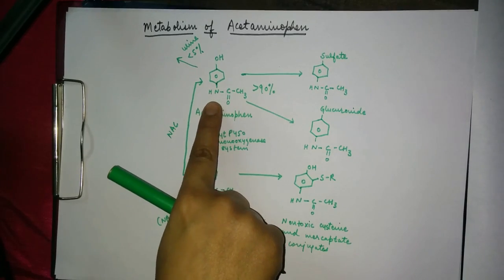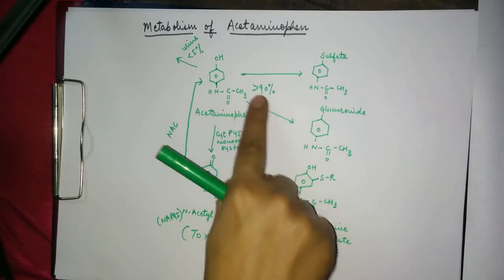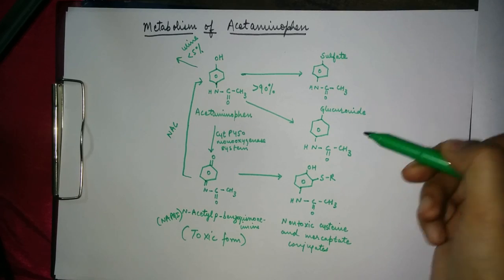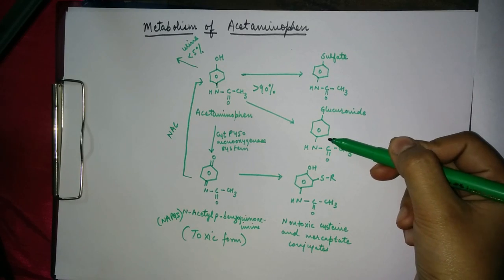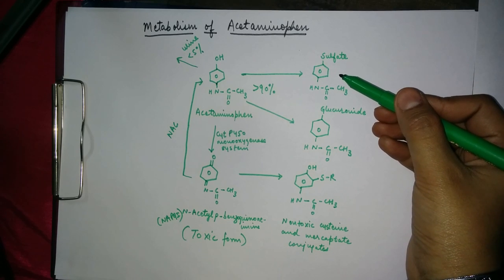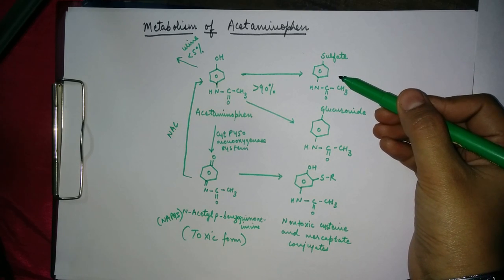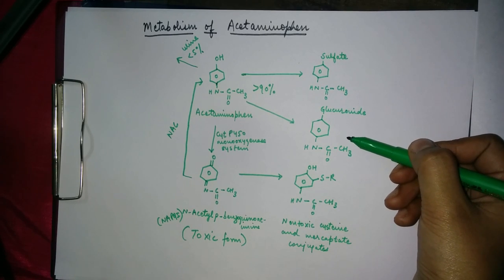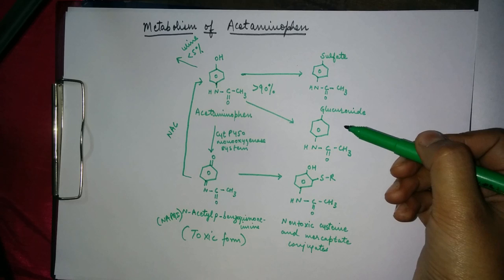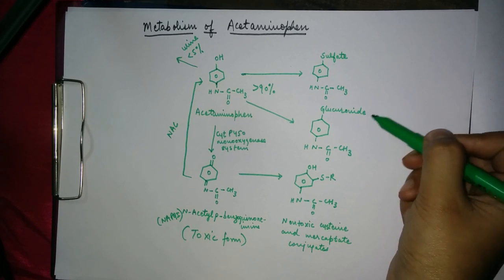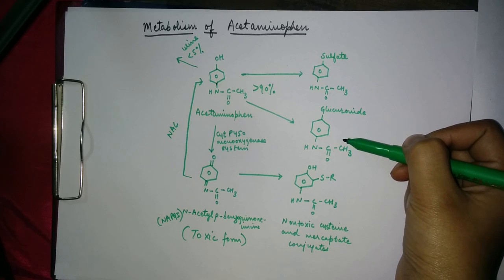When acetaminophen enters our body, about 90% gets converted into sulfate conjugates and glucuronide conjugates. Sulfate conjugates are formed by sulfotransferases, and glucuronide conjugates are formed by UDP glucuronide transferase, which attaches the glucuronide group to the acetaminophen molecule.